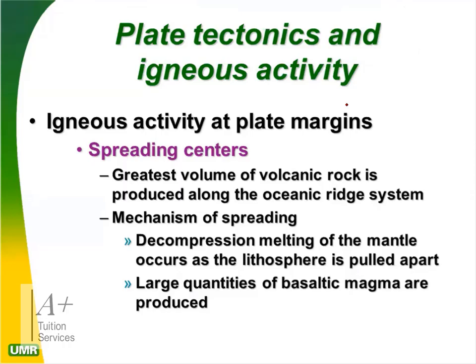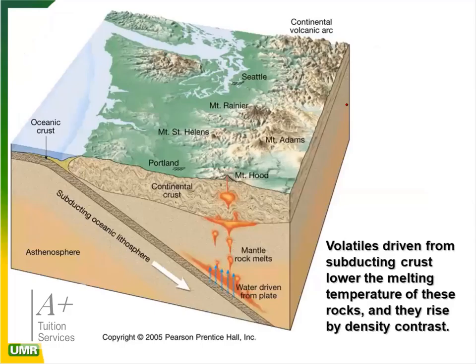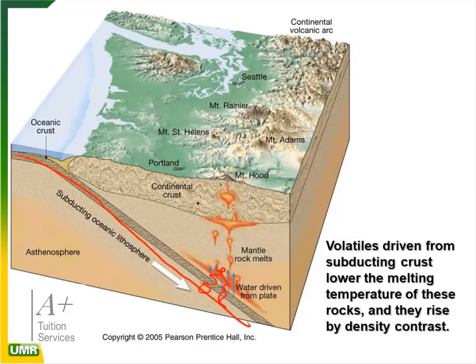Plate tectonics and igneous activity continued: at spreading centers, the greatest volume of volcanic rock is produced along the oceanic ridge system — the mechanism for spreading. Decompression melting of the mantle occurs as the lithosphere is pulled apart and large quantities of basaltic magma are produced. At a destructive plate margin, the oceanic plate is pushed downward into the subduction zone — it melts, water evaporates, and the oceanic crust is pushed up, forming mountains.